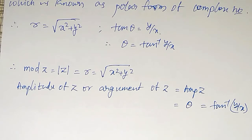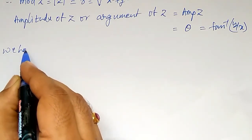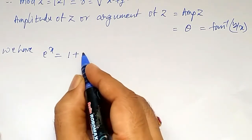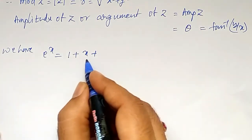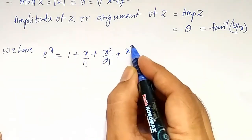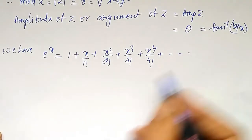Using modulus of z and polar form, one more type of properties I can discuss here. We have e to the power x is equal to 1 plus x divided by 1 factorial, plus x squared by 2 factorial, plus x cubed by 3 factorial, plus x raised to 4 by 4 factorial, plus so on.